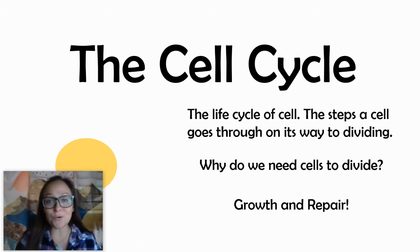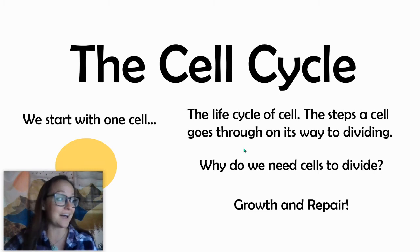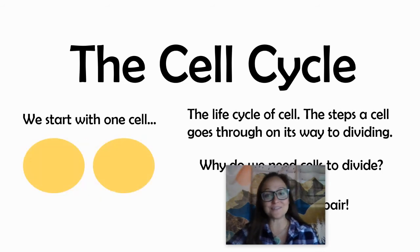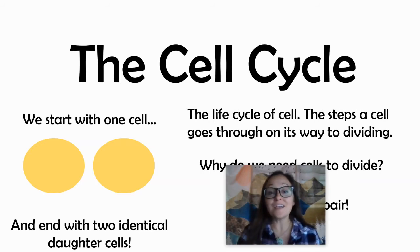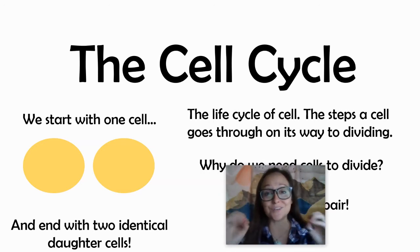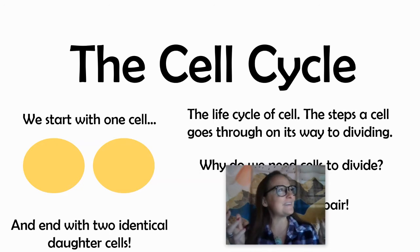And in mitosis, our ultimate goal is to start with one cell and then divide by mitosis into two identical daughter cells. So what we're going to learn are the steps, or what happens, to have one cell become two identical daughter cells, which are really like replicates of the original parent cell.